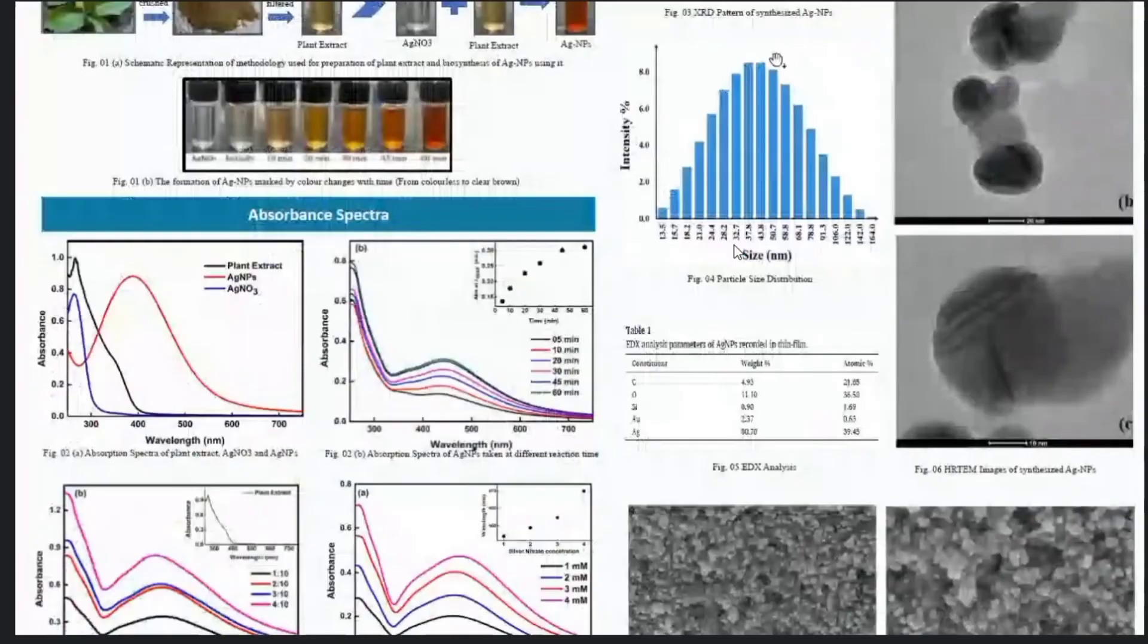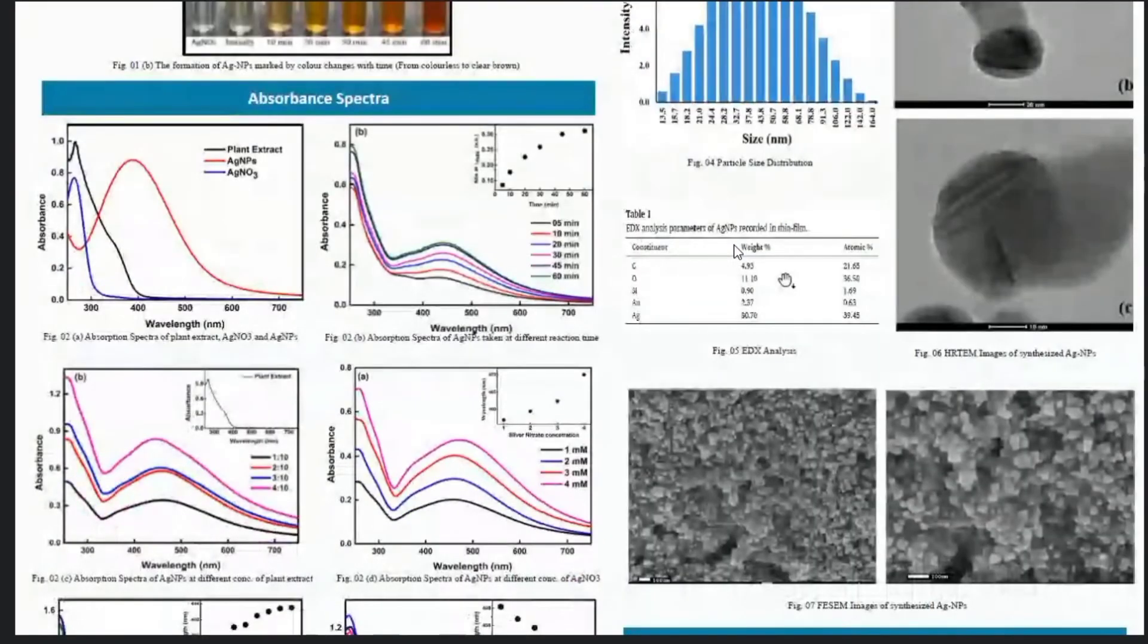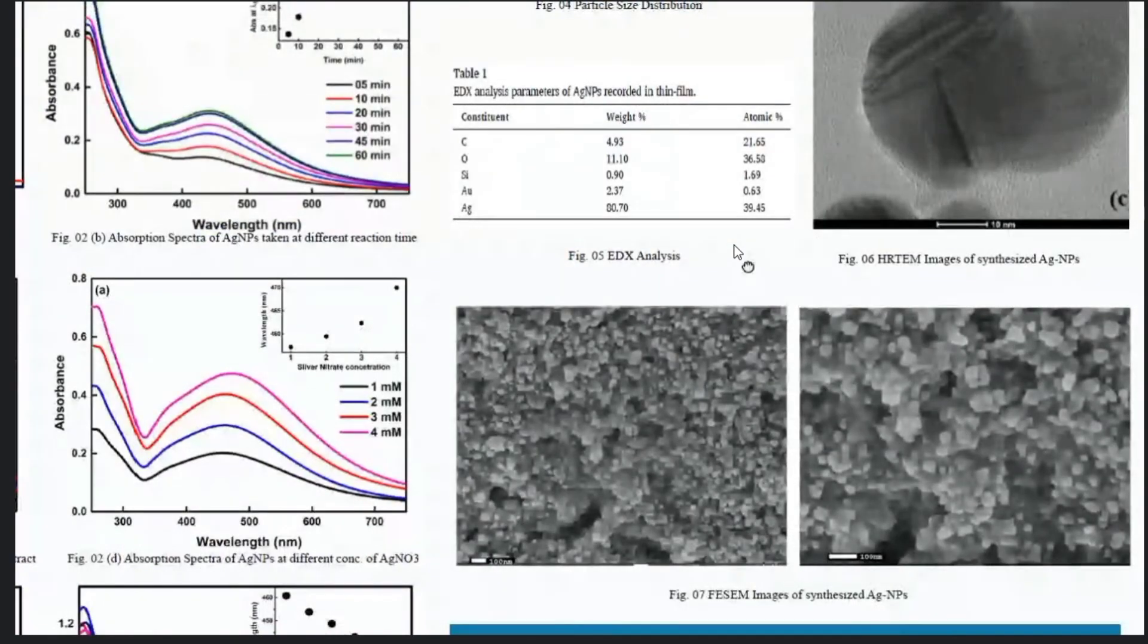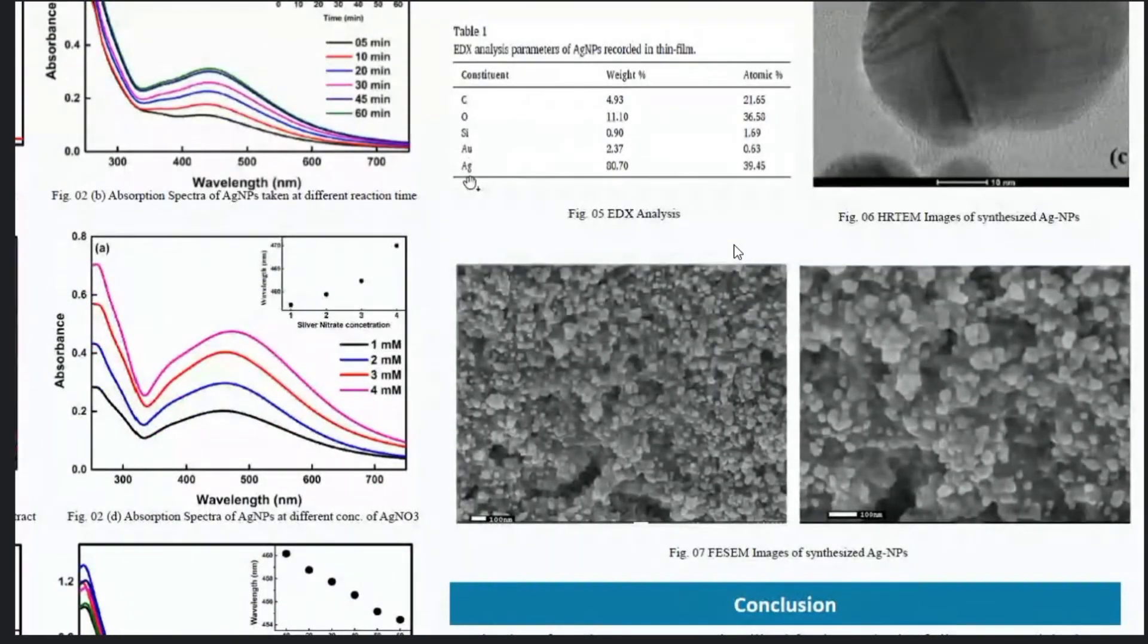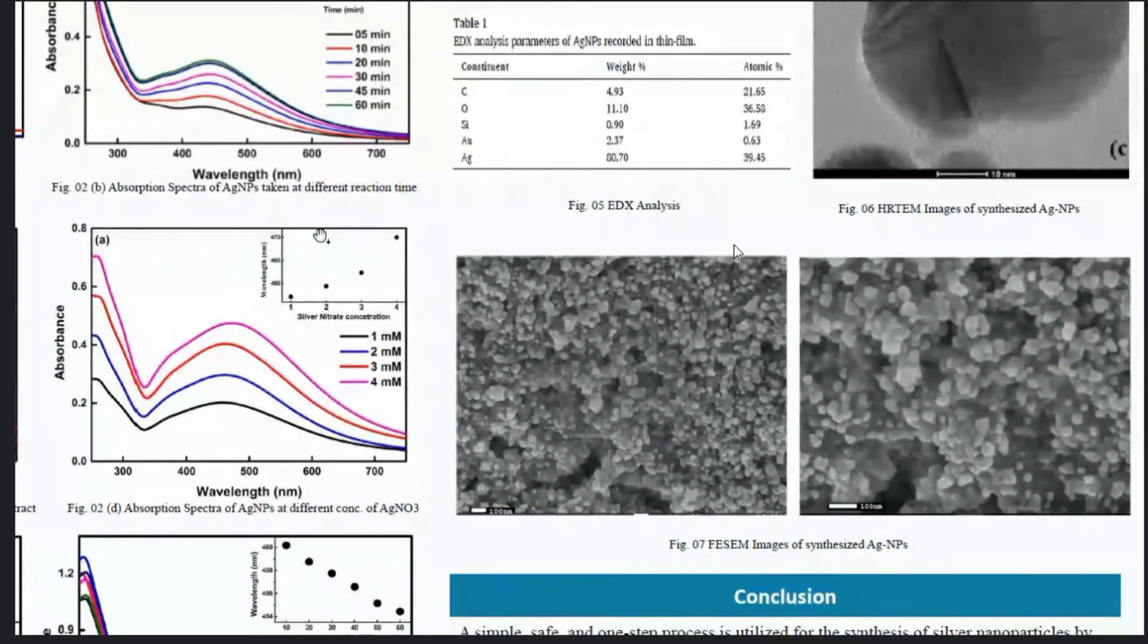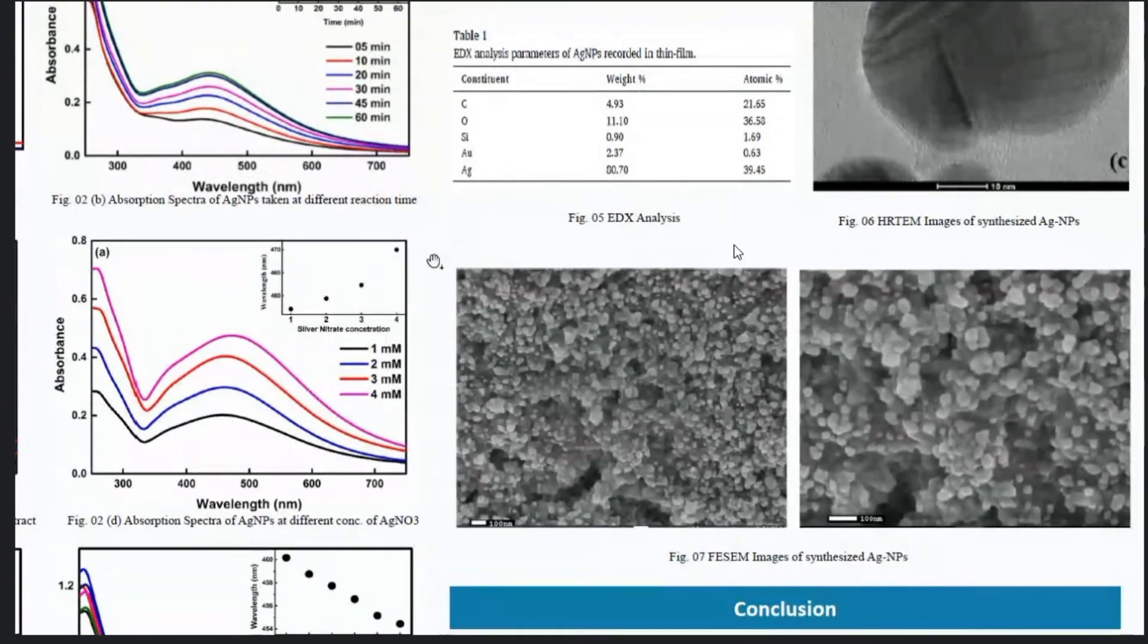This is the EDX analysis from the thin film that was recorded for SEM and we can see that Ag has been found to be 80%. The other constituents are because of the glass substrate plate that was used and gold is also present because of the coating on the thin film.